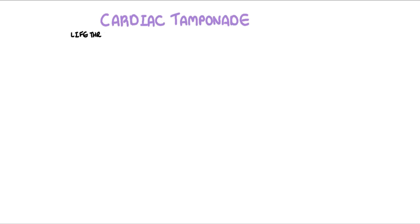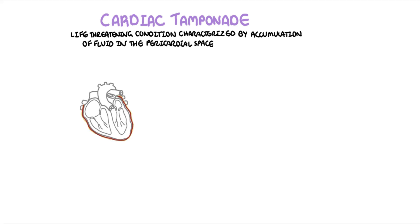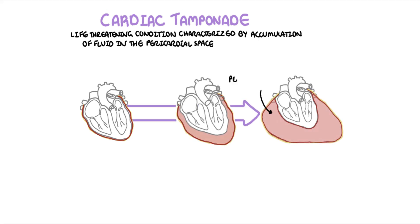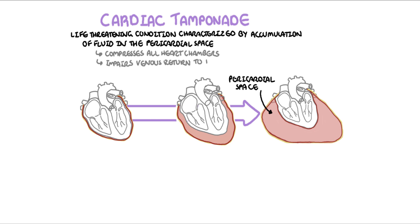Cardiac tamponade is a life-threatening condition characterized by the accumulation of pericardial fluid in the pericardial space. The pericardium is layers which envelop the heart. When fluid increases in the pericardium rapidly, it compresses all heart chambers, impairing venous return to the heart. Filling of the heart is decreased, resulting in a reduced cardiac output, and in later stages obstructive shock.